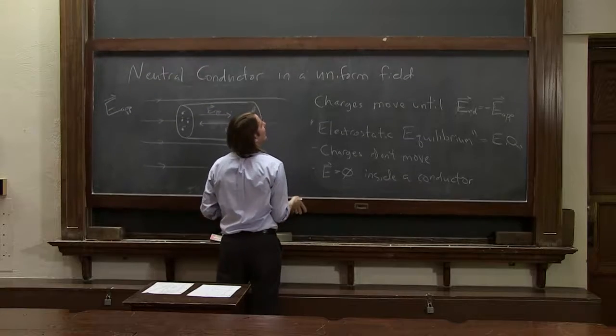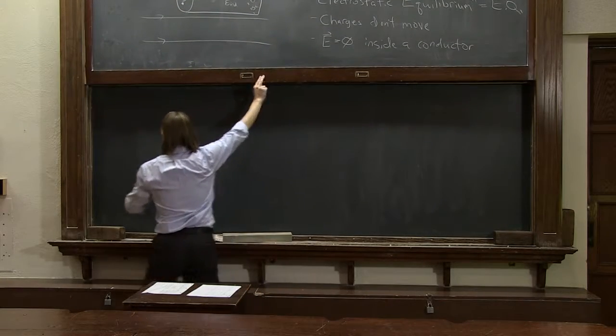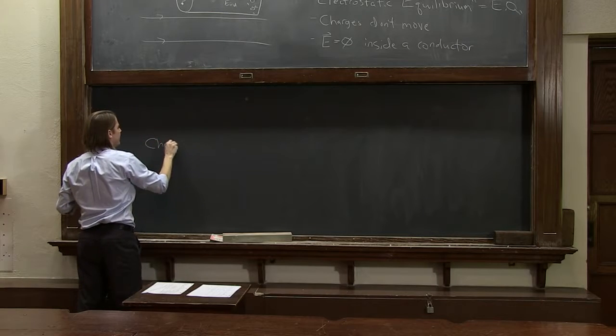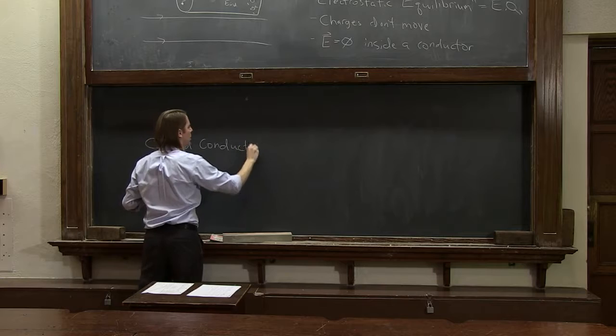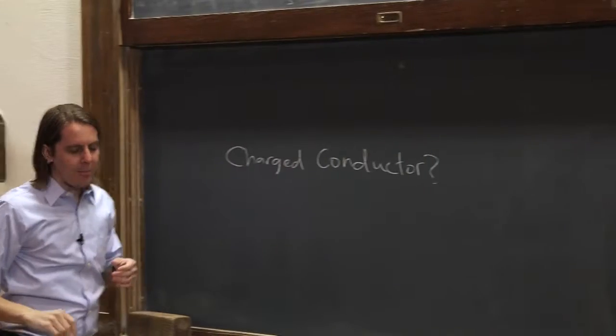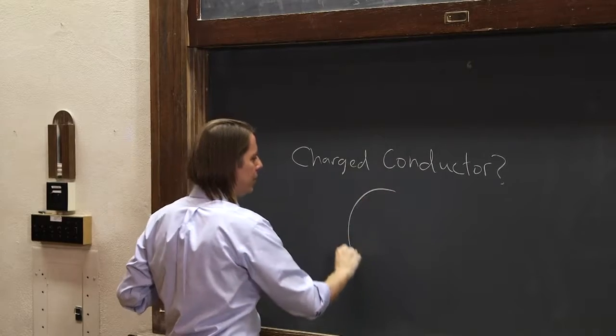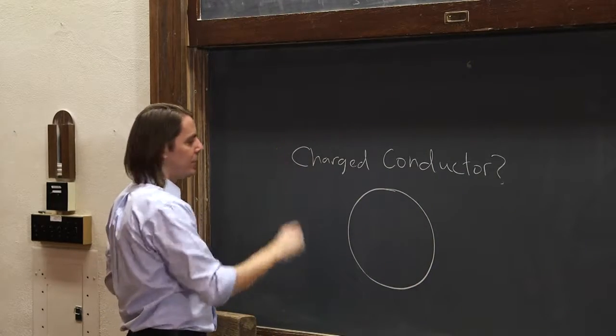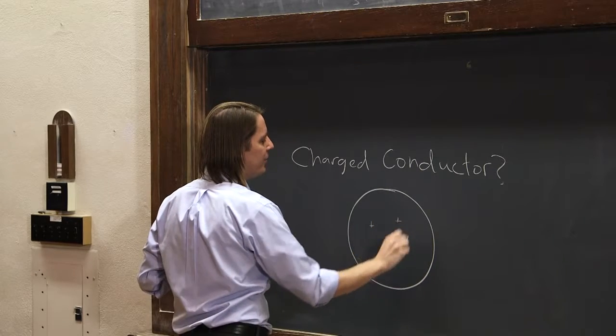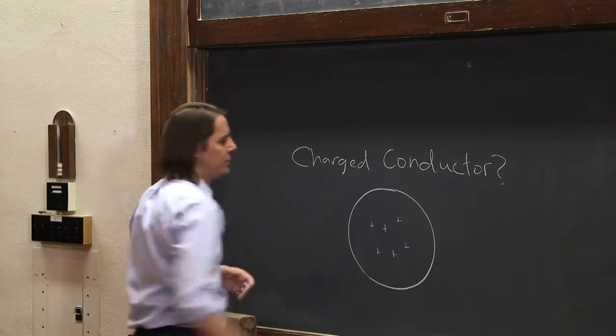Let's look then at something slightly different. That was a neutral conductor. What if we have a charged conductor? Is that different? And basically, the answer is no. Let's imagine a charged conductor here. So, a sphere of a conductor. And let's drop some charge on it. Some positive charges. Here we go. Here they are. Floating around inside this charged conductor.